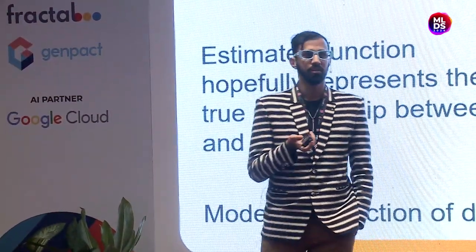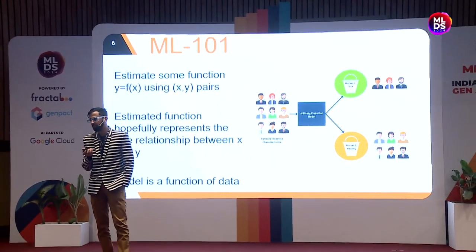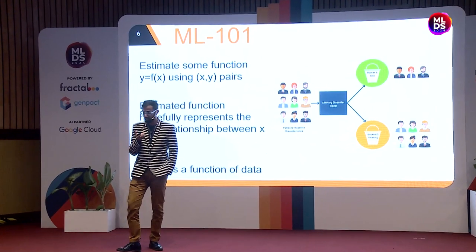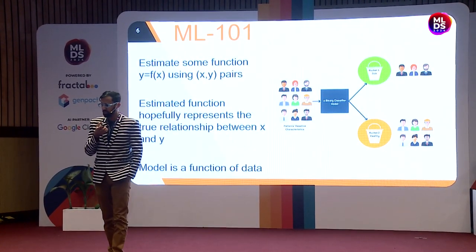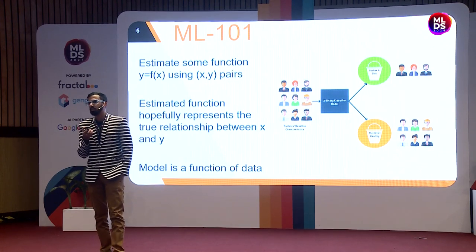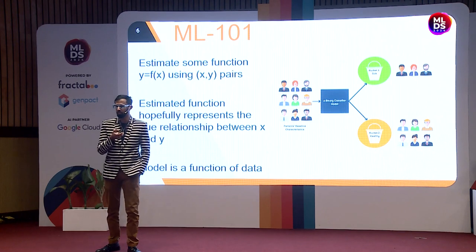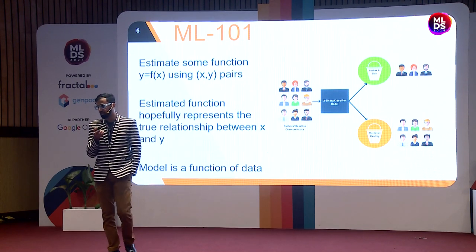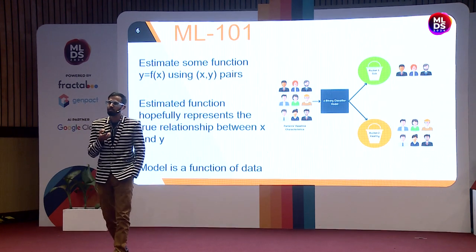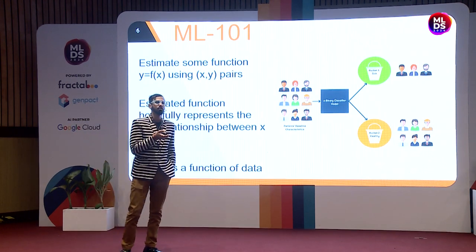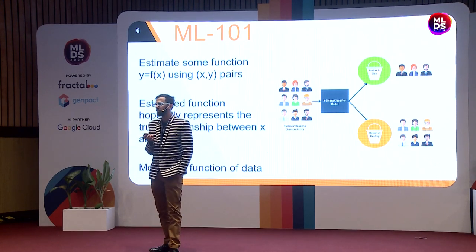A quick refresher: most of you would be from the ML realm. A very quick recap on what a machine learning function does — you have a set of input data and the machine learning model is trying to understand the function that can map the input to the right output. This relationship determination is what the model is actually trying to learn. In a nutshell, the model is trying to be a function of the data.